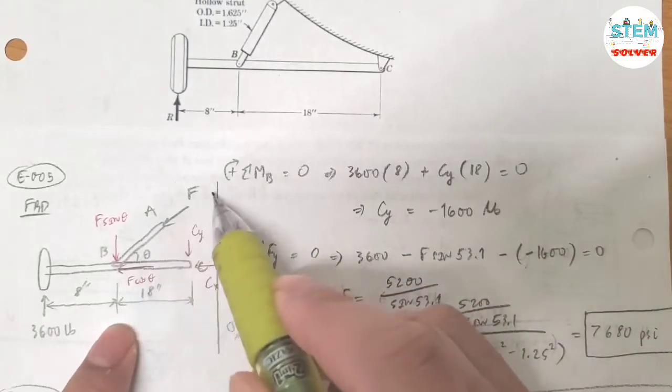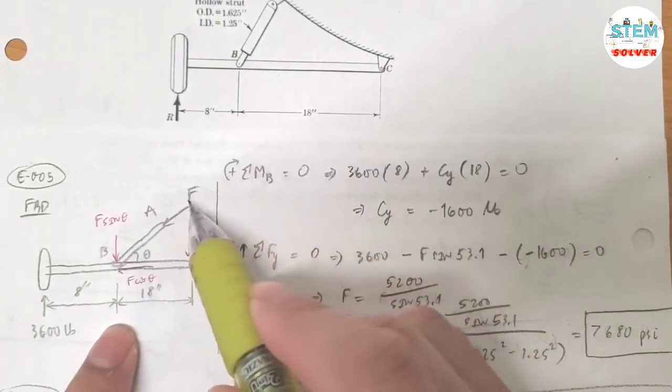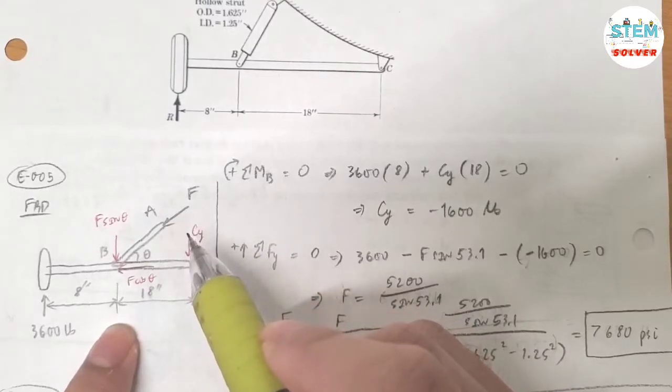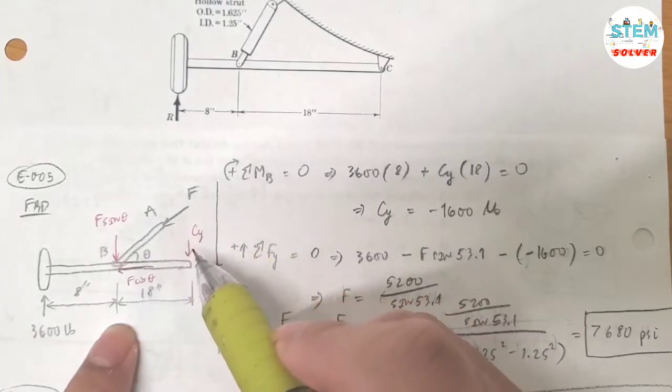Because we are asking to find the compressive stress, the force in this one is compressive force. That's the assumption. You can draw it pointing this way, it's up to you. If you get the positive, your assumption is correct. If you got the negative, the direction of that force is just in the opposite direction.